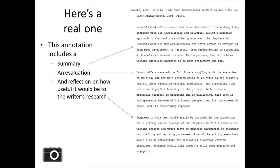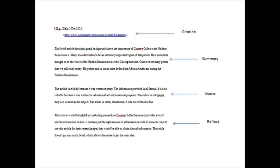So let's look at a real annotation. You'll see that there are four parts. The very top part is the actual citation, and I'll show you a trick in just a moment on how to generate that. Then you can see three paragraphs underneath the citation — the first one is the summary, the second is the evaluation or the assessment, and the third is the reflection. This is a professional annotation to give you an idea of what the goal is.